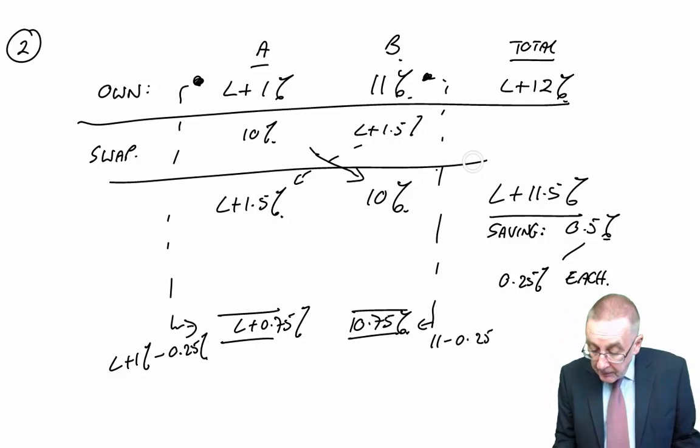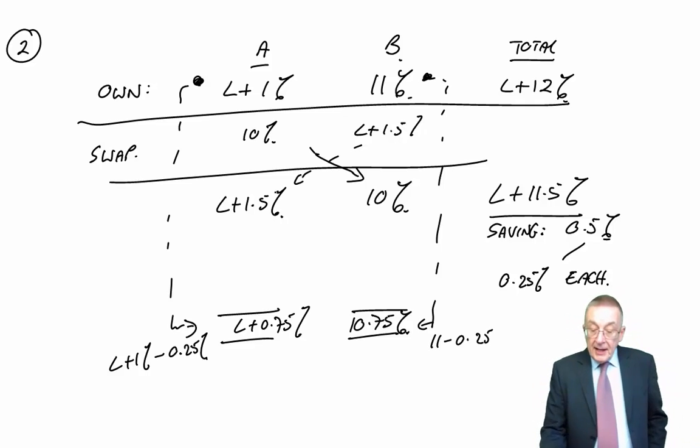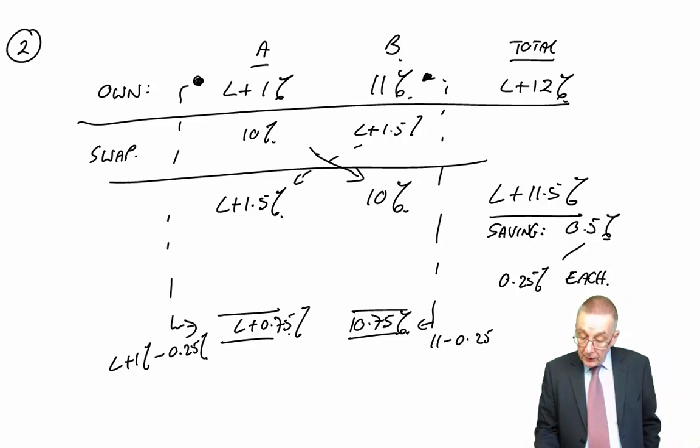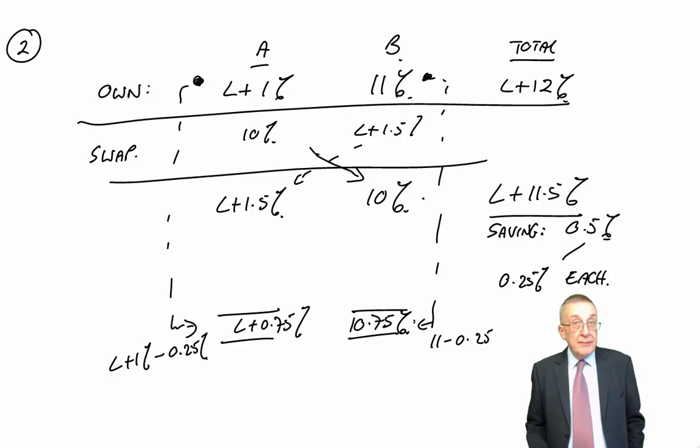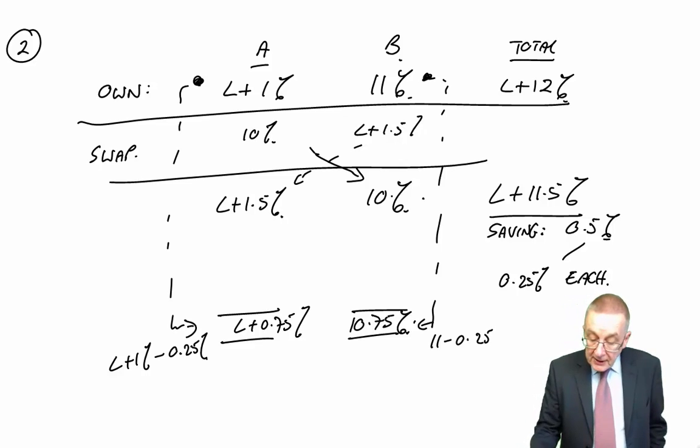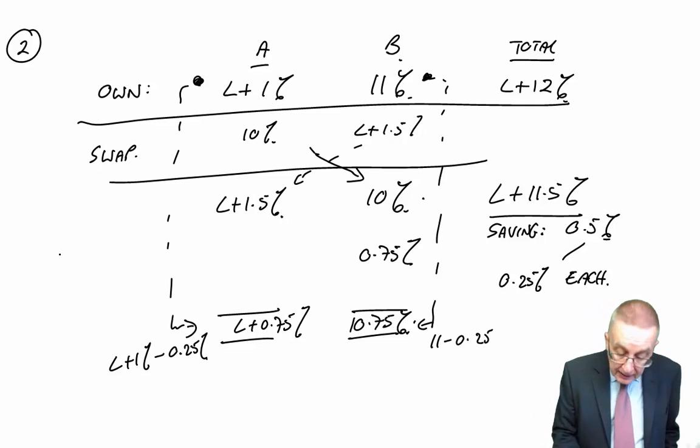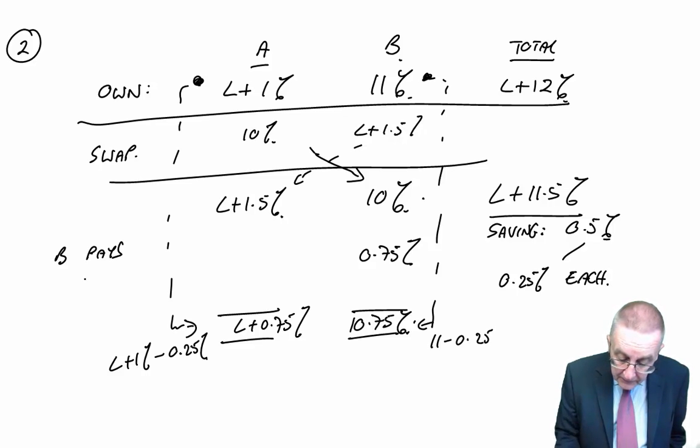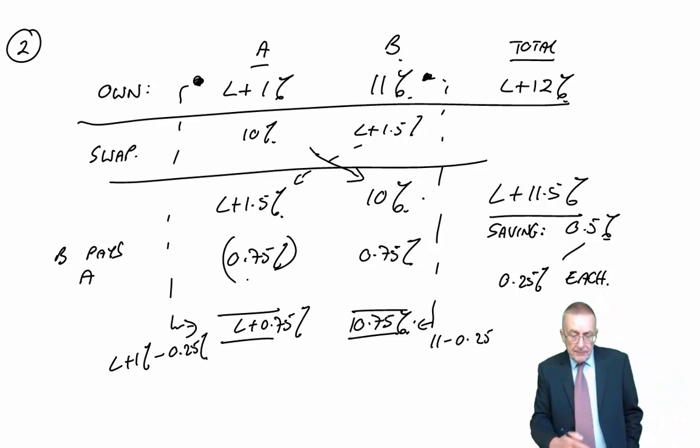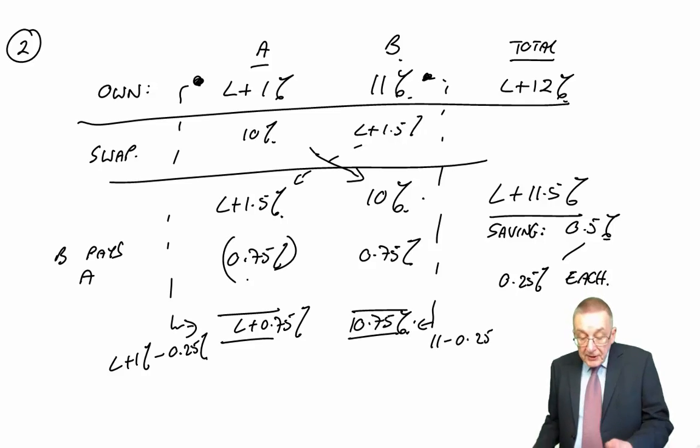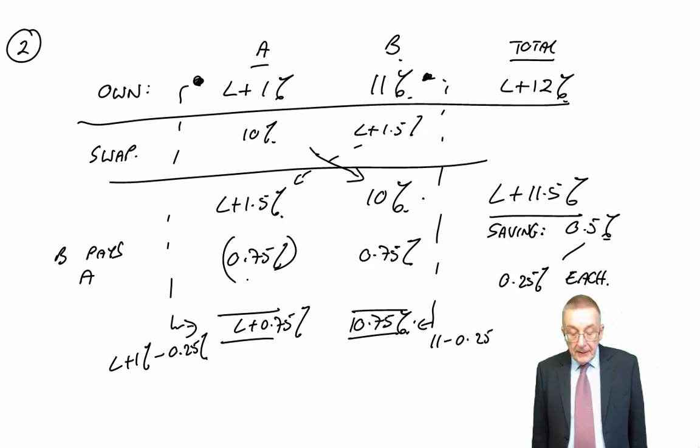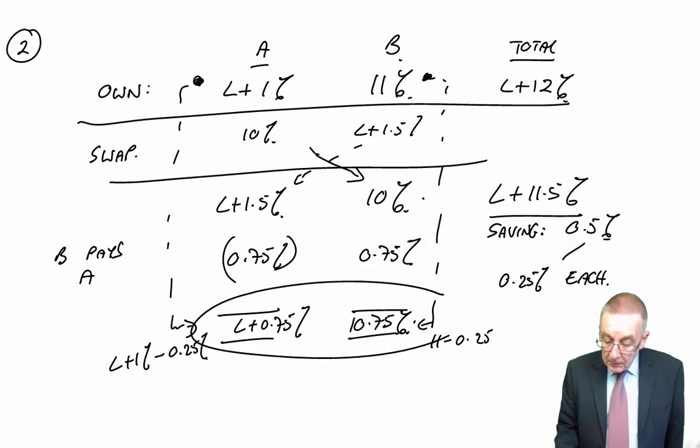How can we achieve it? Well, if they pay each other's interest at the moment, A is paying LIBOR plus 1.5. We only want them to be paying LIBOR plus 0.75. If B is paying 10, we want them to be paying 10.75. And so the difference, B needs to pay an extra 0.75. And B will pay that to A. So A will receive 0.75. It's in brackets, because remember, all these other ones are interests payable. So A ends up paying LIBOR plus 1.5, but receiving from B 0.75. They end up paying a net LIBOR plus 0.75.